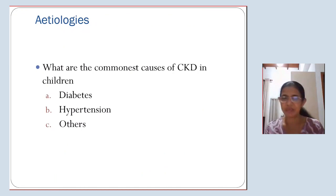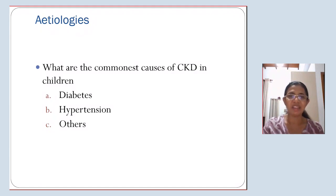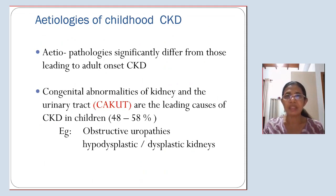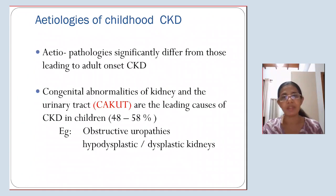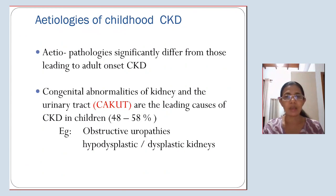What are the commonest causes of CKD in children? Is it diabetes, hypertension, or something else? The etiologies of pediatric CKD differ from those leading to adult CKD. Diabetes and hypertension are the commonest causes in adults, but congenital abnormalities of the kidney and urinary tract — CAKUT — are the leading causes of CKD in children, accounting for 48 to 58% of cases. The most common are obstructive uropathies and hypoplastic or dysplastic kidneys.